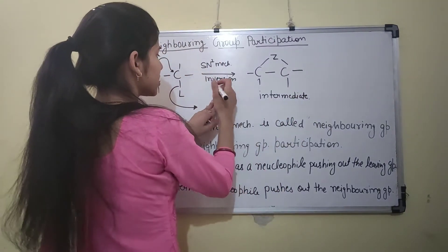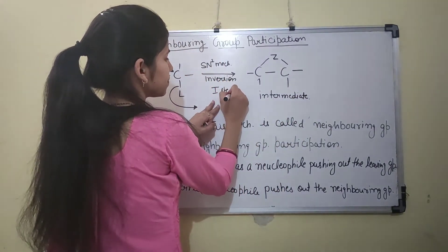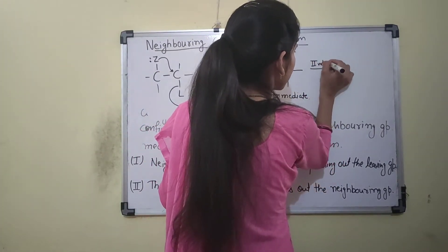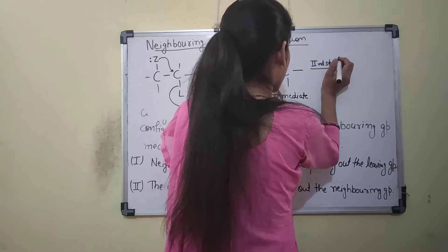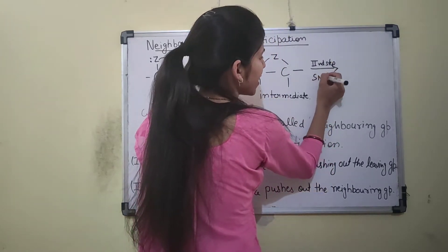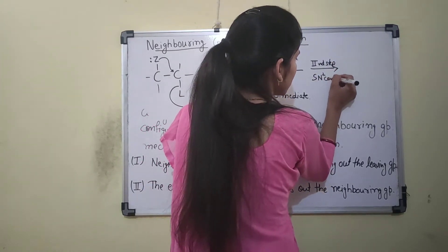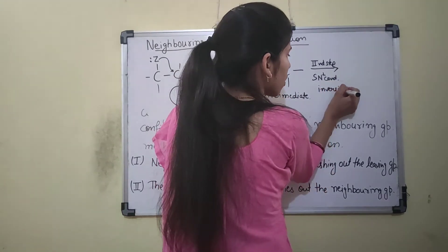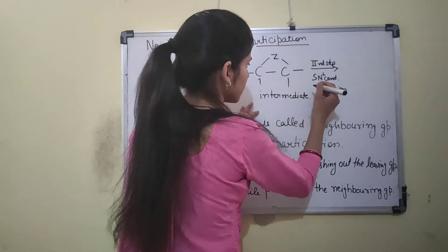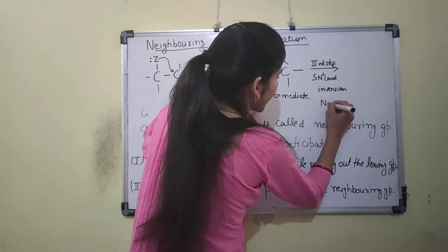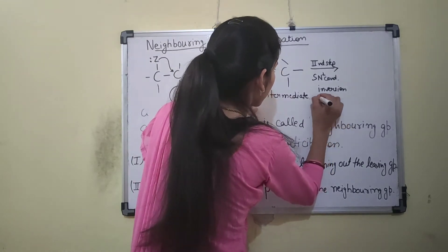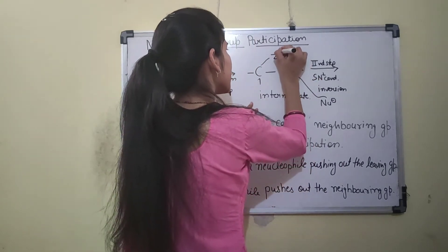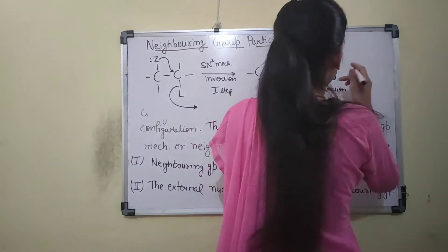This is the first step, and in the second step an external nucleophile (NU) attacks the carbon atom under SN2 conditions, with inversion taking place. The neighboring group is pushed out as the nucleophile attacks.